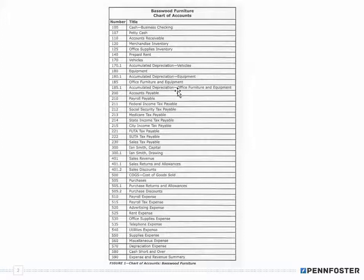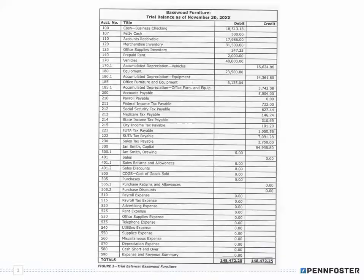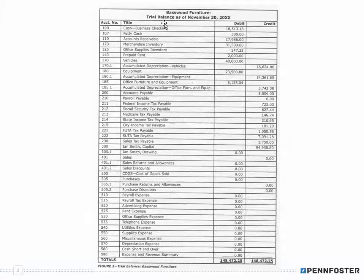Once you have information in your ledger accounts, you can create balances in those accounts. We can then create our trial balance. Notice that the trial balance — the account title is the same as the chart of accounts — but all we've done is added our debits and credits columns so that we can write in whatever that particular balance is.